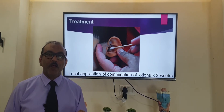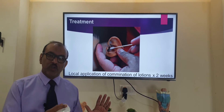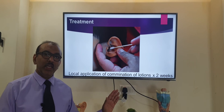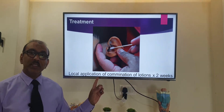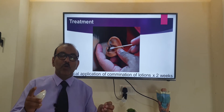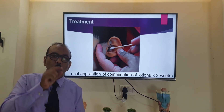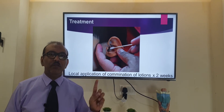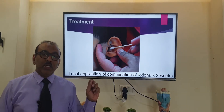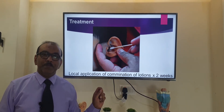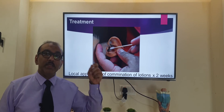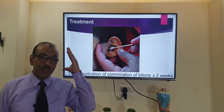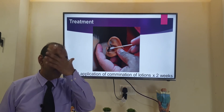After treating the acute otitis externa, we proceed to treat the seborrheic dermatitis. Once the acute stage is treated, apply a lotion combination twice daily for at least two weeks. This is a combination of three lotions — take one drop from each, mix them together, and apply twice daily for two weeks. This alone will not be enough; we must also treat the primary source, which is mainly the scalp.